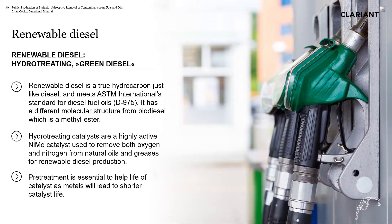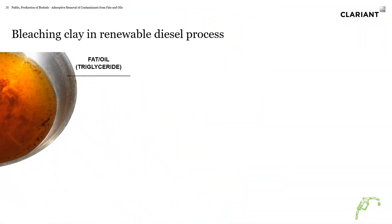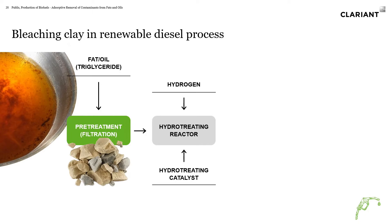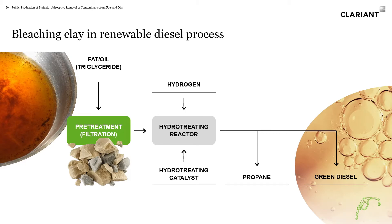The pretreatment is essential for this process because the catalyst is very expensive, and contaminants such as phosphorus really need to be removed. That can really poison the catalyst and cause premature disposal, representing a significant investment. The process starts with the fat or oil, goes through the pretreatment to remove phosphorus and other metals, then goes through the hydro-treating reactor with the catalyst to produce renewable diesel — sometimes called green diesel — with propane as a byproduct that can be reused in the process.